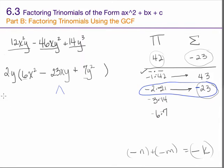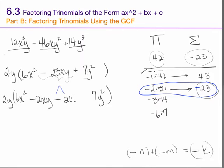Now I have the two numbers I need. I'll write down the 2y greatest common factor, copy down the first term, copy down the last term, close the parentheses, and then go back in and change the middle term into its two parts: negative 2xy and negative 21xy. That's what the middle term is made of — not just x's and not just y's, but xy's. I have negative 23 of them, and when I split the middle term up I need to split it into some xy's and some more xy's.